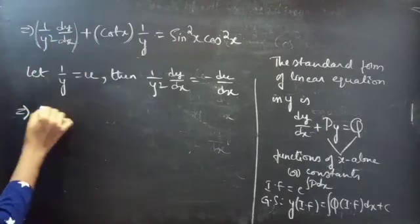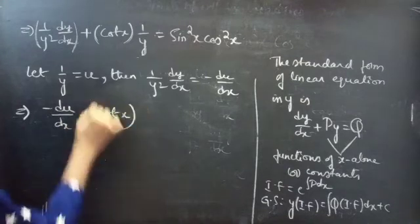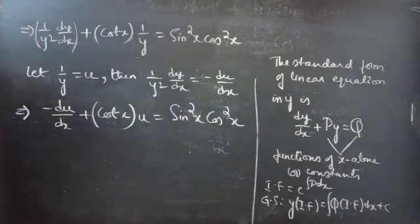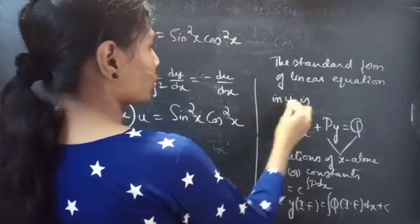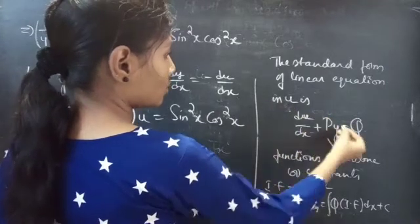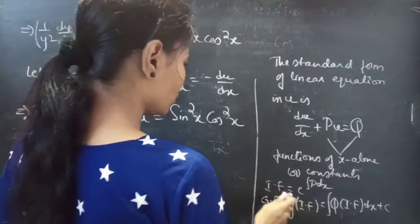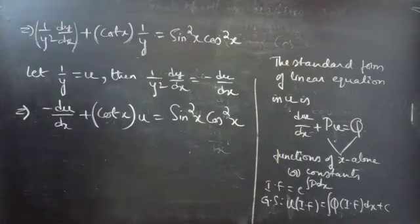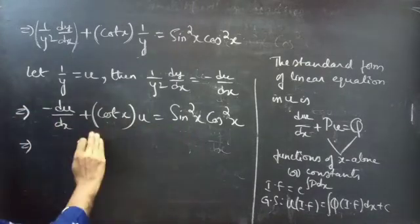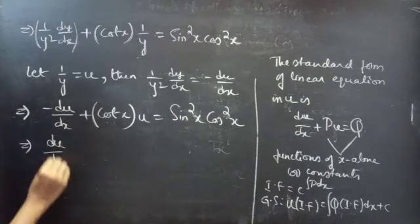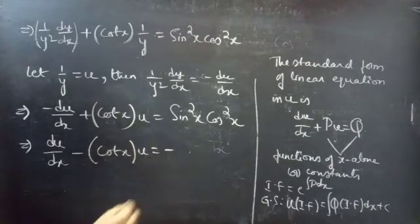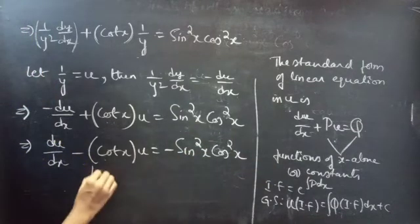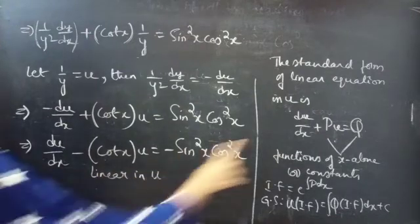Replacing the first term by −du/dx and 1/y by u: −du/dx plus cot(x)·u equals sin²(x)·cos²(x). Since the standard linear form requires the coefficient of du/dx to be positive, we multiply both sides by −1 to get: du/dx minus cot(x)·u equals −sin²(x)·cos²(x), which is linear in u.